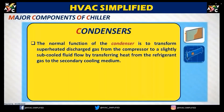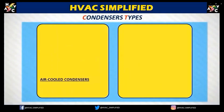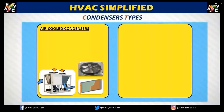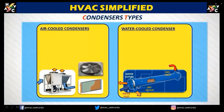The most common secondary cooling media are air and water. In an air-cooled condenser, air is passed through and discharged from the top via an axial fan. In a water-cooled condenser, the refrigerant passes through a shell and tube heat exchanger, and water acts as the medium to transfer the heat.